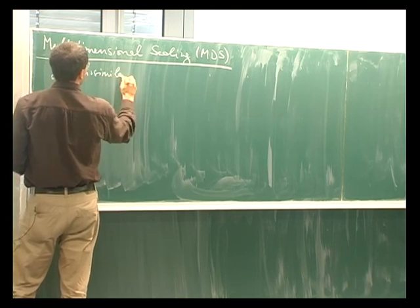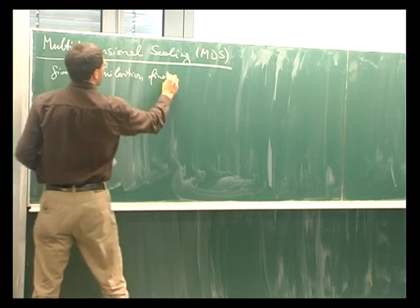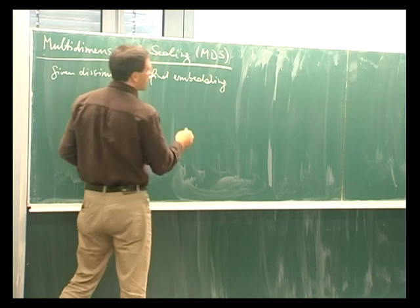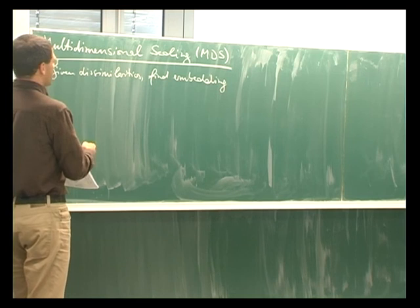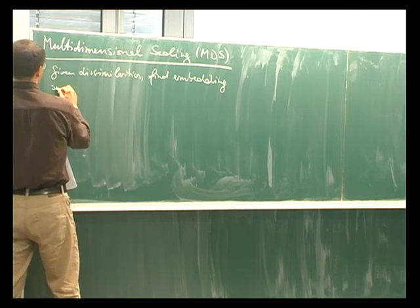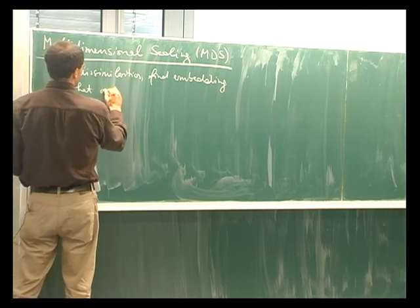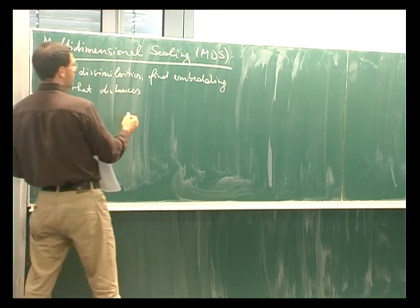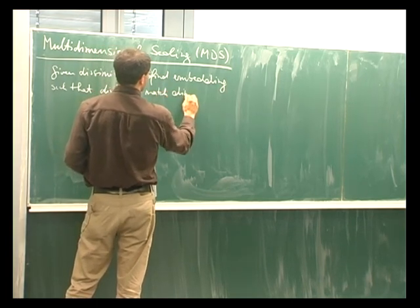Given dissimilarities the aim is to find an embedding where typically the Euclidean distances in this low dimensional embedding shall reflect those original dissimilarities. Such as the distances in the embedding match the original dissimilarities.